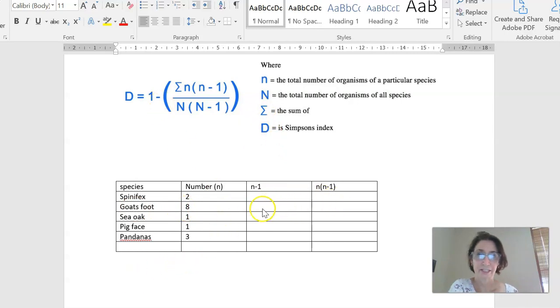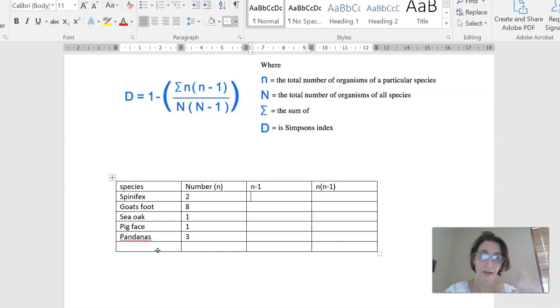Let's fill in these columns first of all. So here in this column, I just need to take this number in this column n and subtract 1. So 2 subtract 1, I can do that in my head, is 1. 8 subtract 1 is 7, 1 subtract 1 is 0, pig face, 1 subtract 1 is 0, and pandanus, 3 subtract 1 is 2. So you can see that's quite an easy column to fill out there.